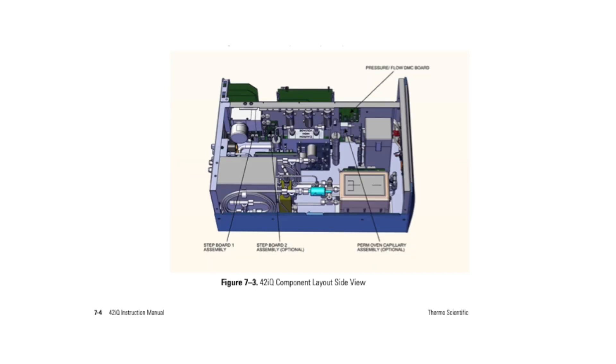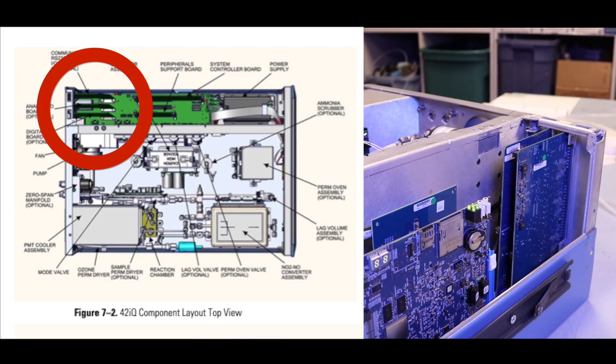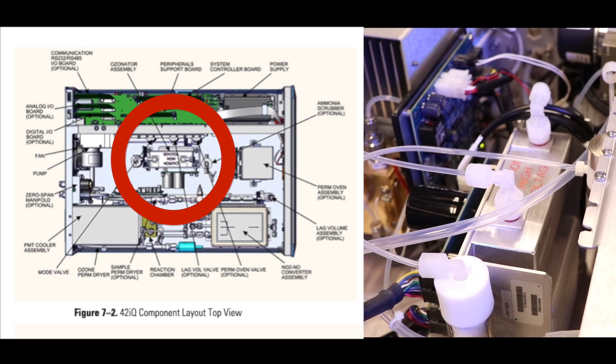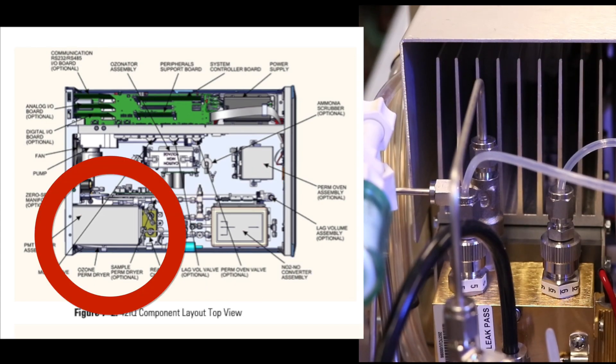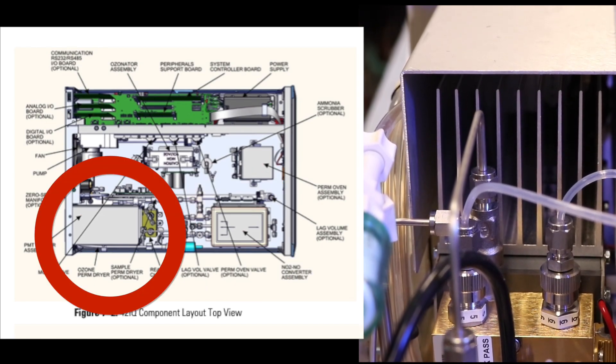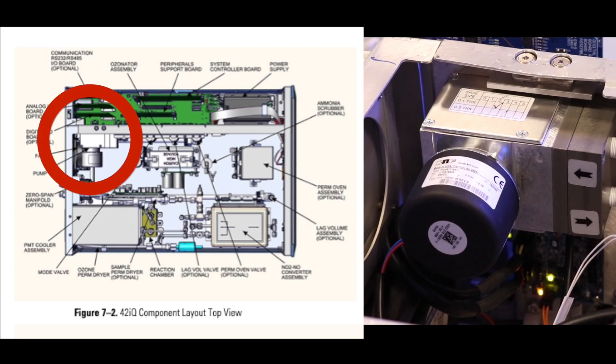Refer to figures 7-2 and 7-3 in your manual for a component layout drawing. The major internal components include communications and supporting boards, ozonator assembly, NO2 to NO converter, PMT cooler assembly, reaction chamber, and the pump.